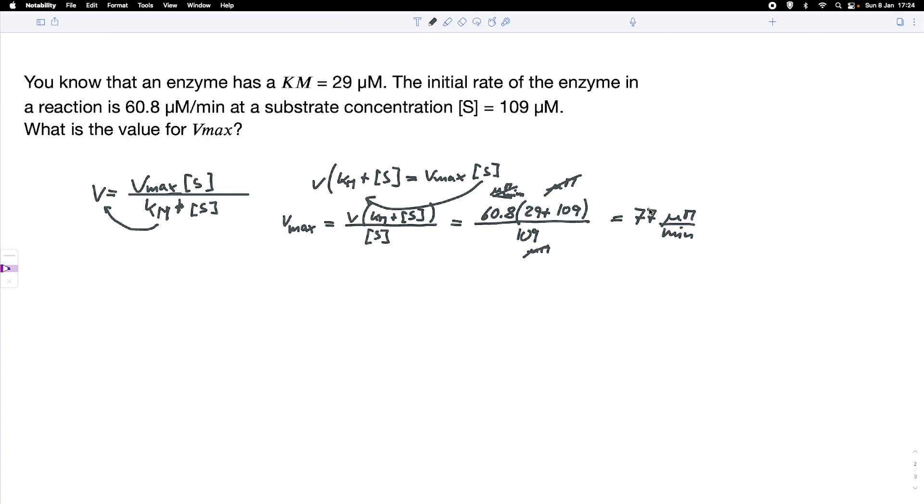We see the 77 is considerably higher than our initial rate, which makes sense because Vmax is the maximum rate at which this reaction can proceed.